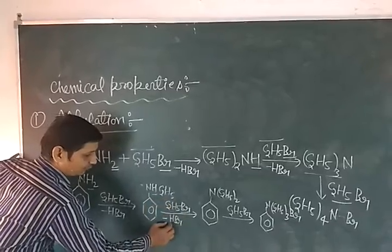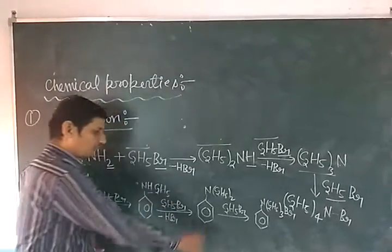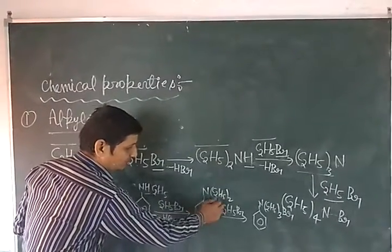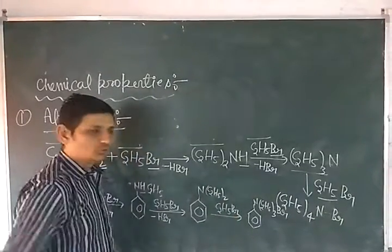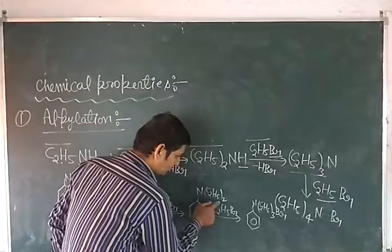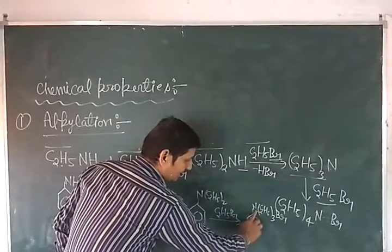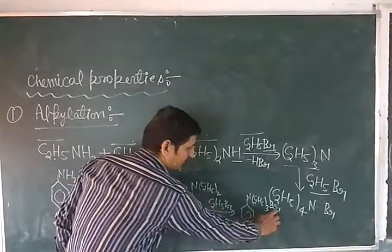Then H and Br combine to form HBr and form N-benzyl amine with C2H5, which reacts with ethyl bromide to form N-benzyl amine with C2H5 and Br.